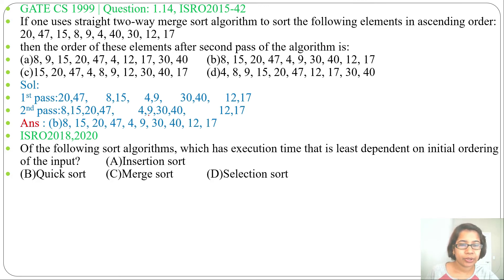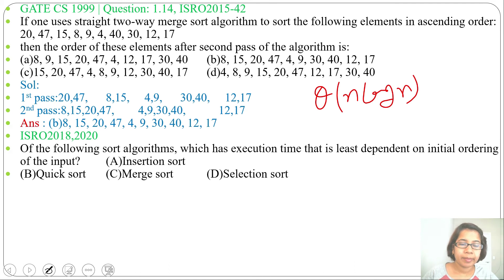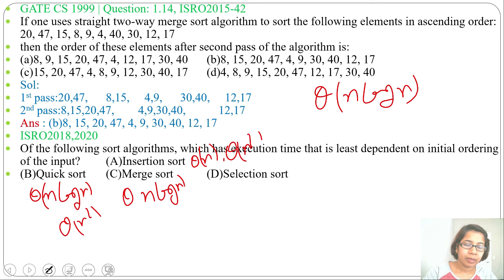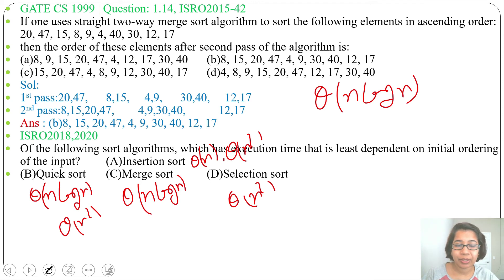For merge sort, best case, worst case, and average case running time are all the same — Θ(n log n). For insertion sort, best case is Θ(n) whereas worst case is Θ(n²). For quick sort, best case is Θ(n log n) and worst case is Θ(n²). For merge sort, all cases are Θ(n log n). For selection sort, all cases are Θ(n²). For insertion sort, if the input is already in sorted order, that is the best case. For quick sort, random order is the best case — if already sorted (increasing or decreasing), that is the worst case. For merge sort, it does not depend on the initial order. So the answer is option C — merge sort doesn't depend on the initial ordering of the input.